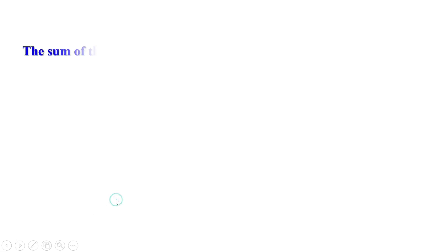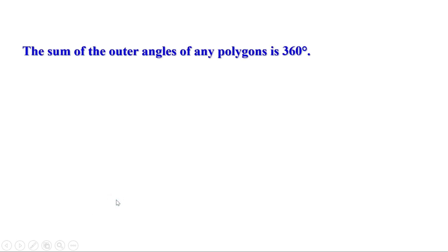That means the sum of the outer angles of an n-sided polygon is 360 degrees, for any value of n. So for any polygon, the sum of outer angles is always 360 degrees.